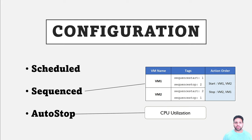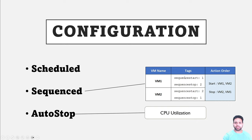Now let's talk about configuration. For scheduled VM start/stop, you provide the schedule in the logic app and then provide the virtual machine list, resource group, or subscription where all virtual machines will be stopped. For the sequence case, you provide different tags like sequence start and sequence stop on those virtual machines, defining values of one and two. During start, VM1 starts first then VM2; during stop, VM2 stops first then VM1. For autostop, you define the CPU utilization threshold in the logic app — for example, if it's less than 5% during off-business hours, the server will be stopped and you'll receive a notification.